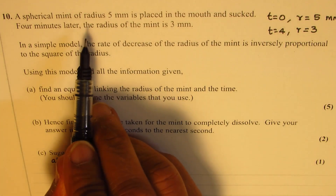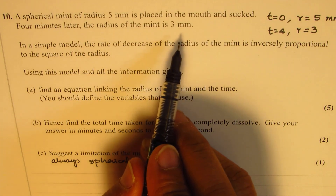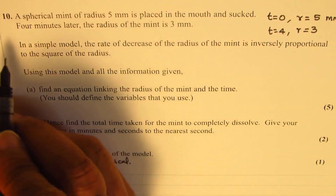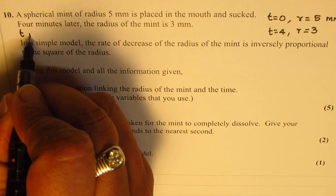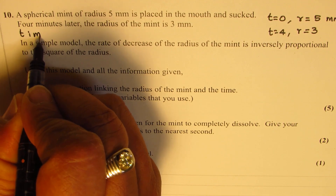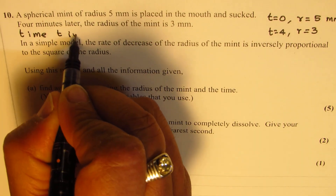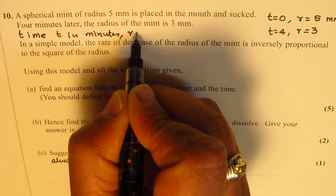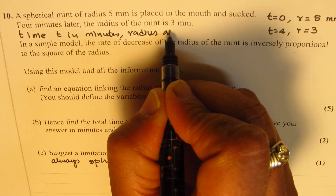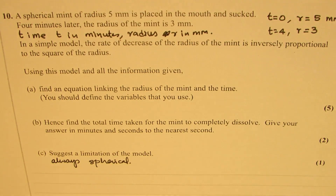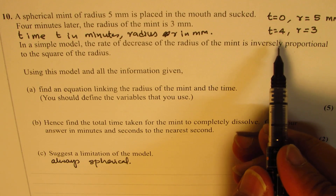This is in millimeters, and the time is given in minutes. So we'll define: t is time in minutes, and r is radius in millimeters.